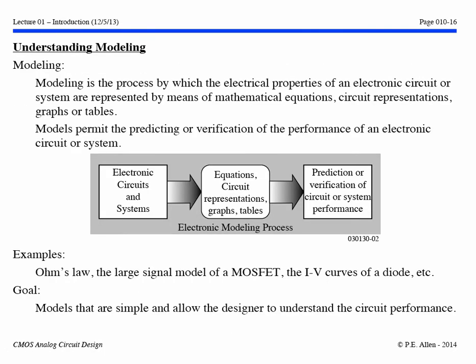A second aspect important in the analog circuit design skill set is to understand modeling. Modeling is the process by which the electrical properties of an electronic circuit or system are represented by means of mathematical equations, circuit representations, graphs, or tables. Such models allow the designer to predict or verify the performance of an electronic circuit or system. Examples of models would be Ohm's law, the large signal model of a MOSFET, the VI curves of a diode, and things of this nature.